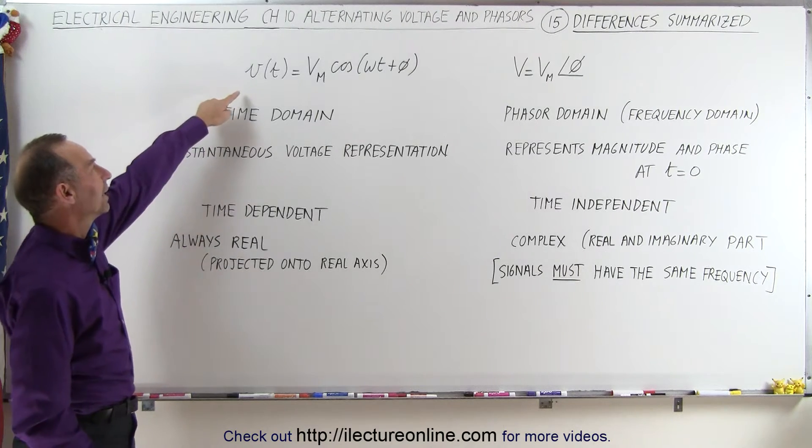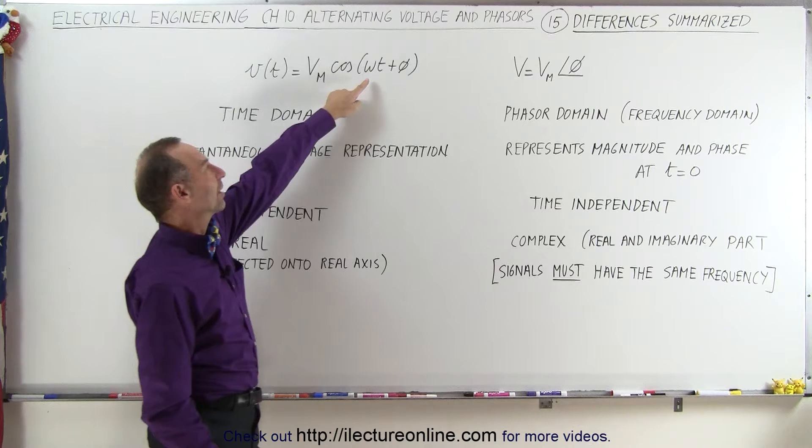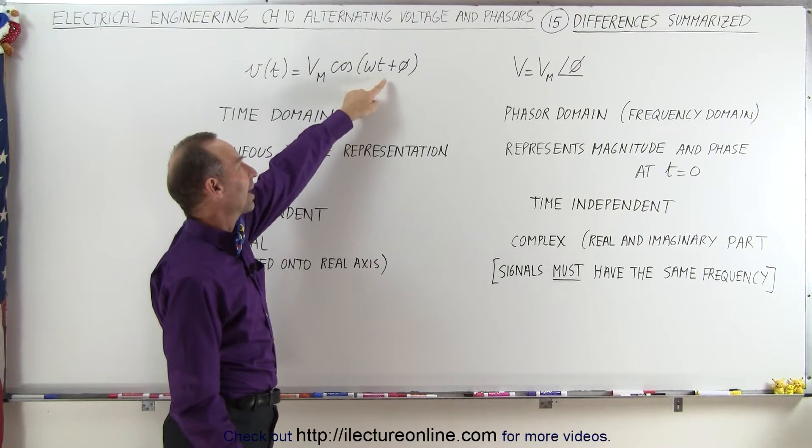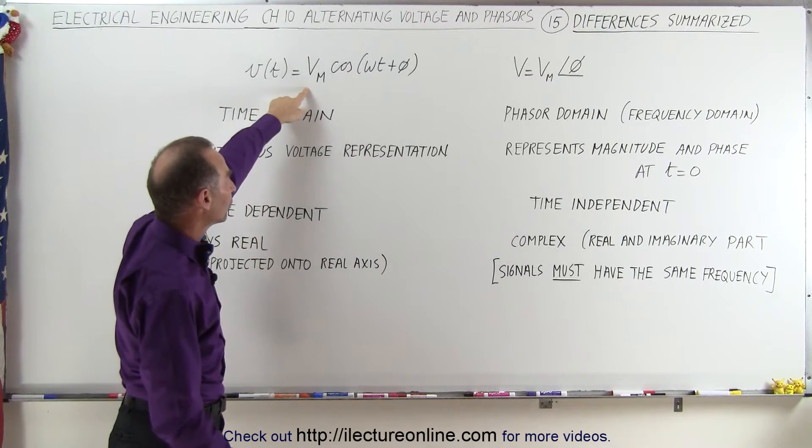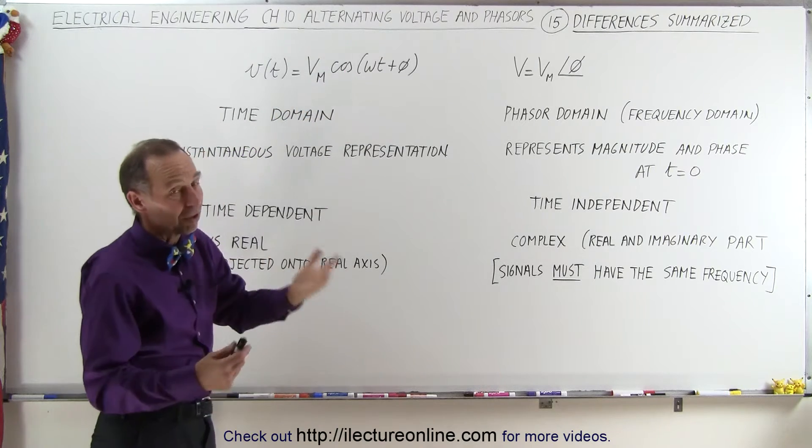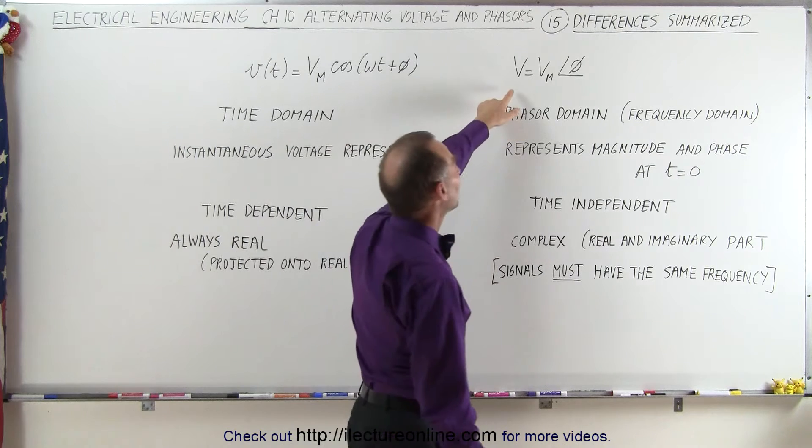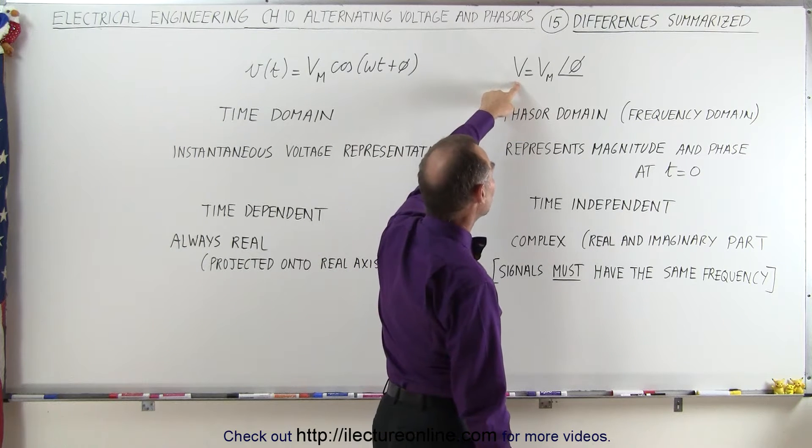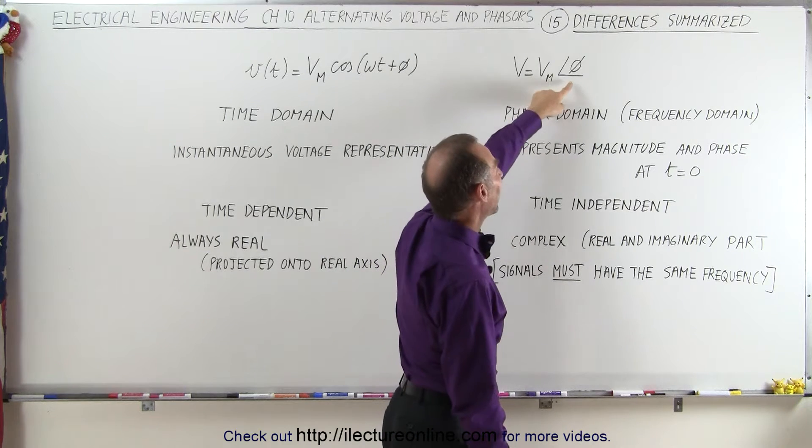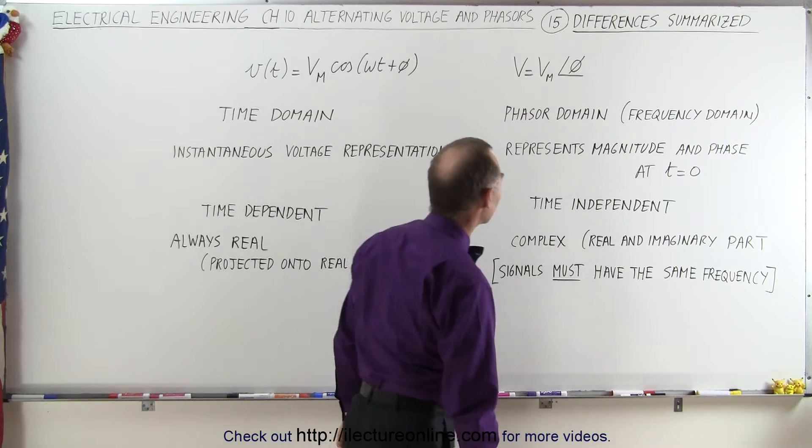The time domain is an equation that depends on the time, the frequency times the time plus the phase angle. Notice it's the maximum voltage times the cosine or potentially the sine of omega t. In the phasor domain, we have a vector representation which is equal to the magnitude and a phase angle.